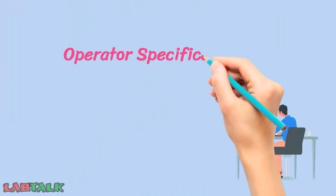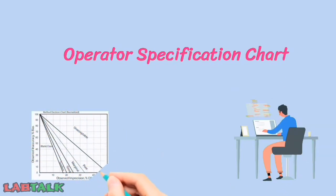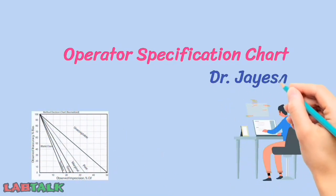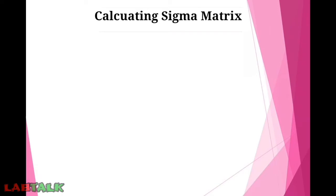We will see now about the operator specification chart in internal quality control. In this video we are going to see how to plot the operator specification chart, but before that we will see how to calculate the sigma matrix with an example. In the last video we already saw how to calculate the sigma matrix, so in this video we will see with the help of an example.